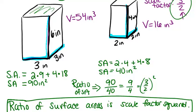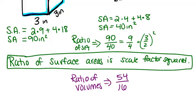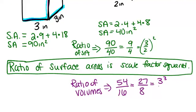So if we think about the ratio of the volumes, it'll be 54 over 16, which reduces to 27 over 8 if you divide both the numerator and denominator by 2. Now, how does 27 over 8 relate to the scale factor of 3 over 2? Well, 27 is 3 to the third power, and 8 is 2 to the third power. So 27 over 8 is actually just the scale factor 3 over 2 cubed. And if we think about surface area being squared and the volume ratio being cubed, it should make sense because volume is a three-dimensional measurement and surface area is a two-dimensional measurement. So in general, the ratio of the volumes will always be the scale factor cubed, and this would work for any two similar solids, even if they're not prisms.